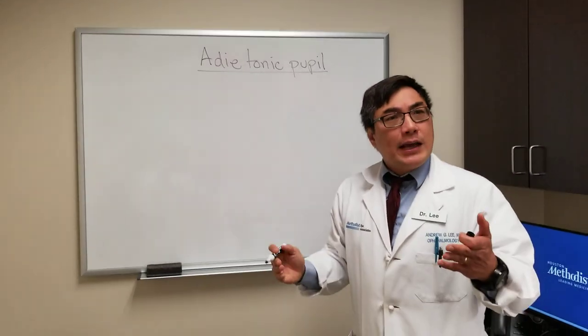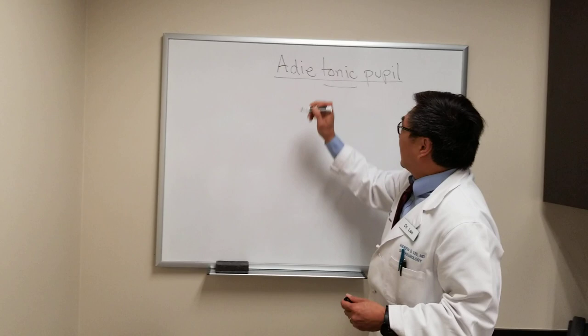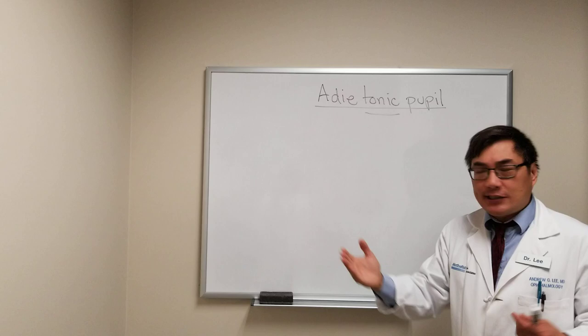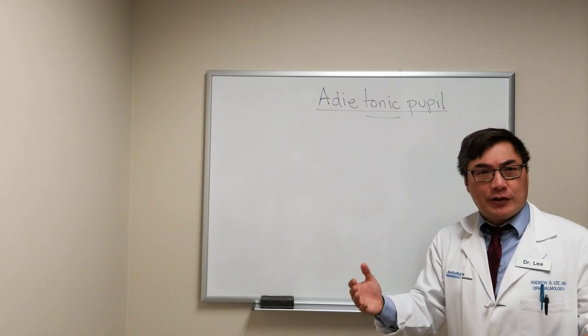Today we're going to talk about the Adie's tonic pupil. The key part is the tonic part. What 'tonic' means is the pupil constricts but then stays tonically constricted. That tonic constriction is the feature that differentiates the tonic pupil from other common causes of pupil dysfunction where the pupil doesn't react well to light.